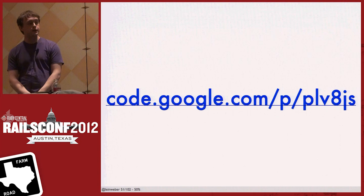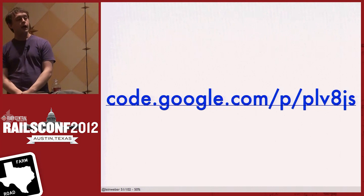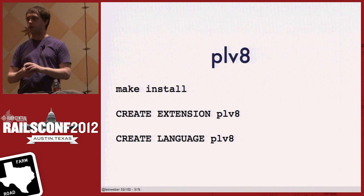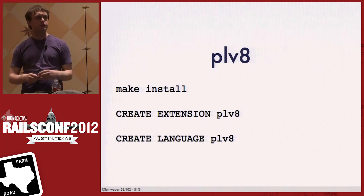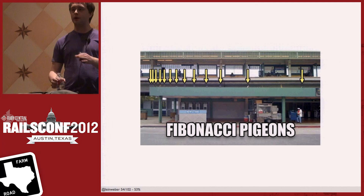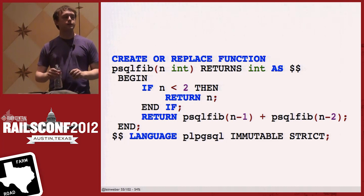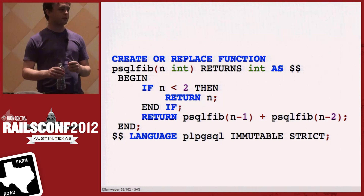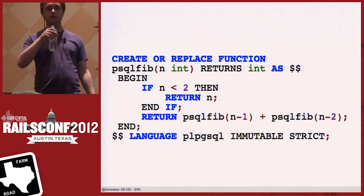If you want to try out PLV8, you can get it from Google Code. Making it is pretty easy. I tried making a Homebrew recipe for it, but because it installs inside Postgres they didn't want to accept it into the official Homebrew repository. If you go to my GitHub you can get the recipe. Just 'make install', 'create extension', and 'create language'. Fibonacci is not a great benchmarking thing but it's a nice quick demo. Here's what Fibonacci looks like written in Postgres PL/pgSQL — it's angry, all caps, and I don't like it. But it's a good naive recursive implementation.